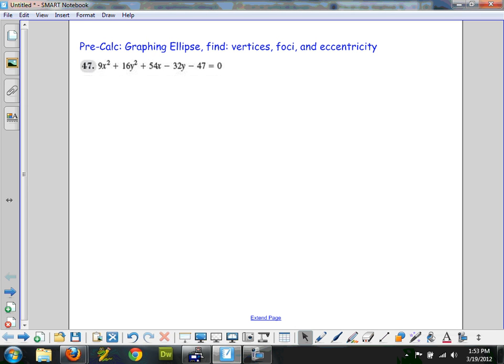Okay, so I'm going to try to graph this ellipse. This is an ellipse because we have an x squared and a y squared. First thing you want to recognize is when you have x squared and y squared, you have an ellipse.